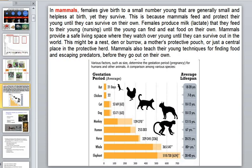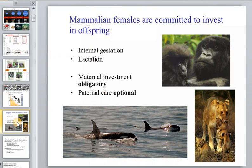This teaching applies to absolutely all mammals. In most mammals, the mother takes care of offspring, and paternal care appears as an option — it is not required. Internal gestation and lactation represent obligatory maternal investment, while paternal care is optional in general.